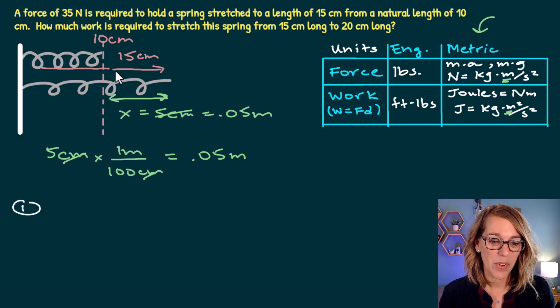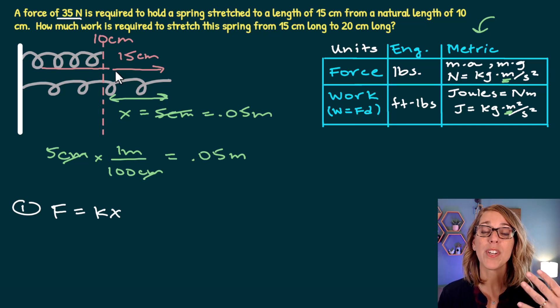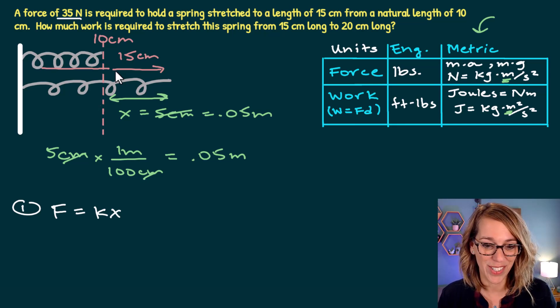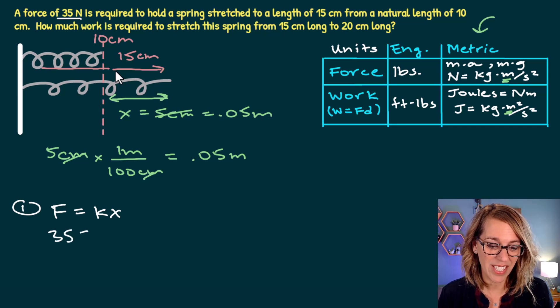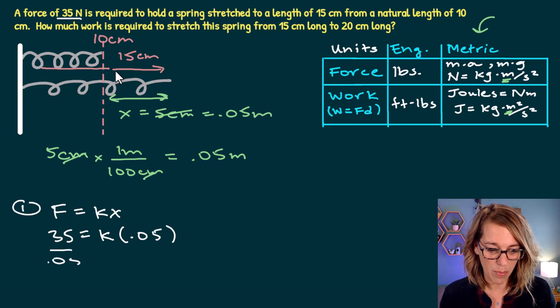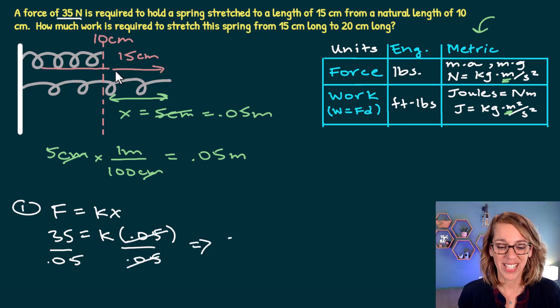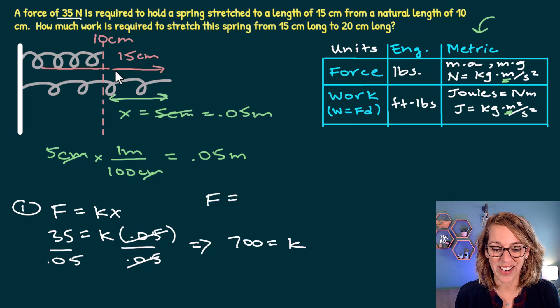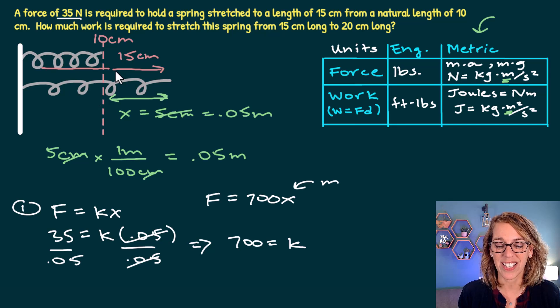Now I'm ready to find that spring constant k. So step number one, we've got this force of 35 newtons. So force is equal to k times the distance traveled. I'm going to go ahead and keep that distance as meters. So my force of 35 newtons is equal to k times 0.05. And if I go ahead and divide both sides by 0.05, this gives me 700 is equal to k. So our force function is going to be 700 times x. So 700 times x. And we want to make sure that x is in meters.